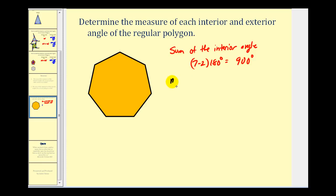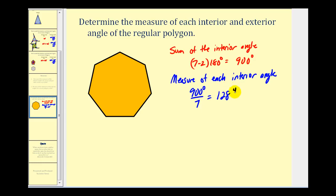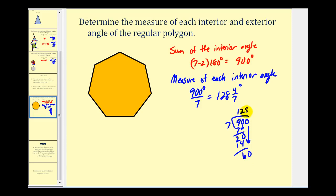So the measure of each interior angle would be 900 degrees divided by seven, since we have a regular polygon. Performing the long division: 900 divided by seven gives us 128 and four-sevenths degrees.